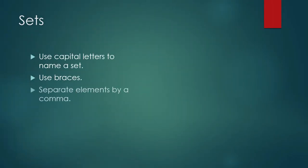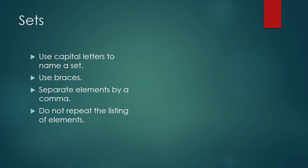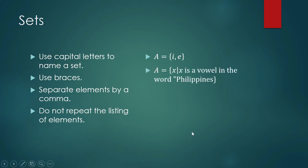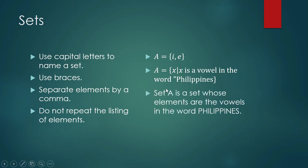When constructing sets, we use capital letters to name sets, collect the elements inside a pair of braces, separate the elements by a comma, and do not repeat the listing of elements. For example, A is the set containing I and E. In rule method: A is equal to x such that x is a vowel in the word Philippines. In plain English: Set A is the set of vowels in the word Philippines.